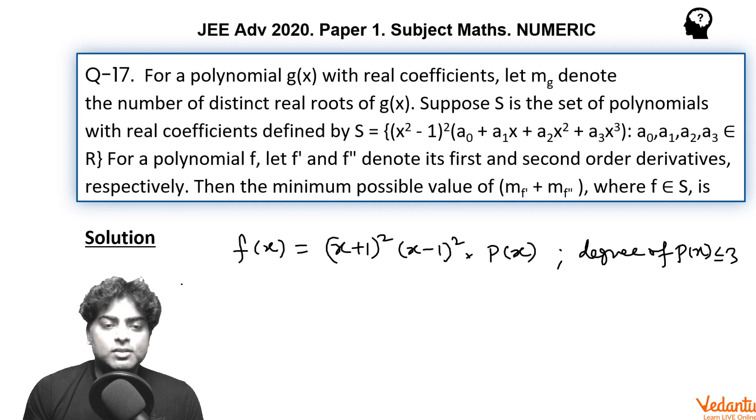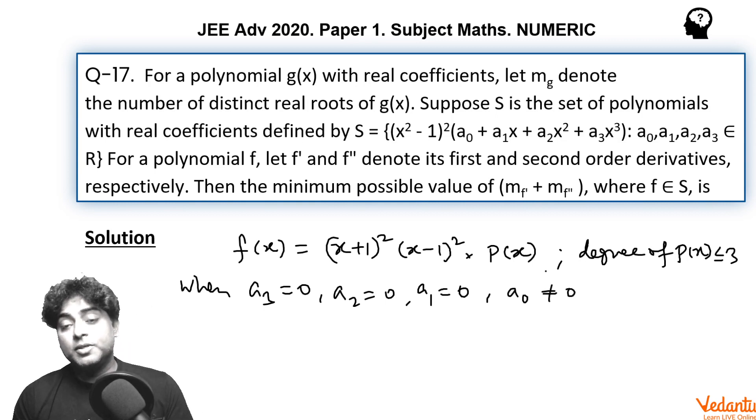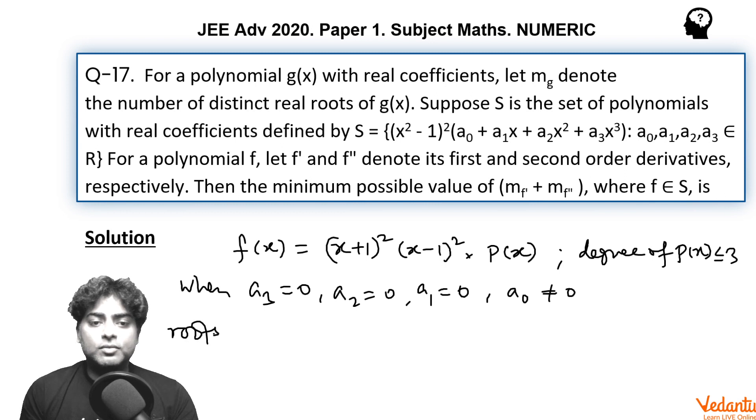Considering the case when a₃ = 0, a₂ = 0, a₁ = 0 but a₀ ≠ 0. Means the polynomial P is a constant non-zero polynomial, so it has no real root. In that case, the roots of f will be minus 1, minus 1, 1, and 1.